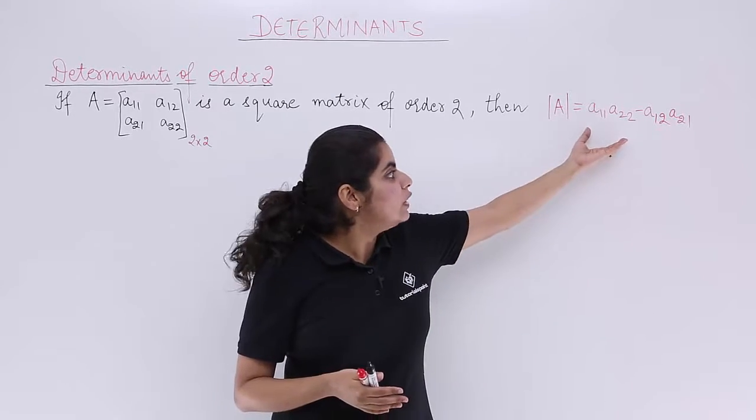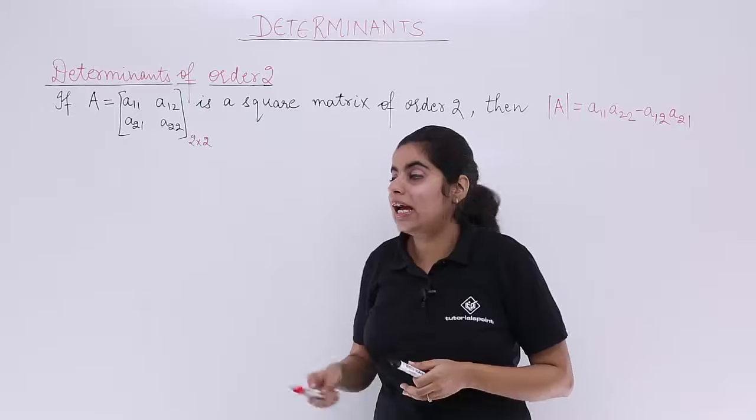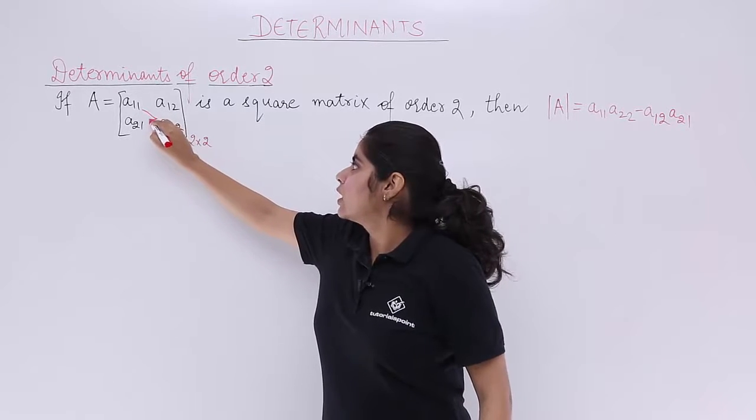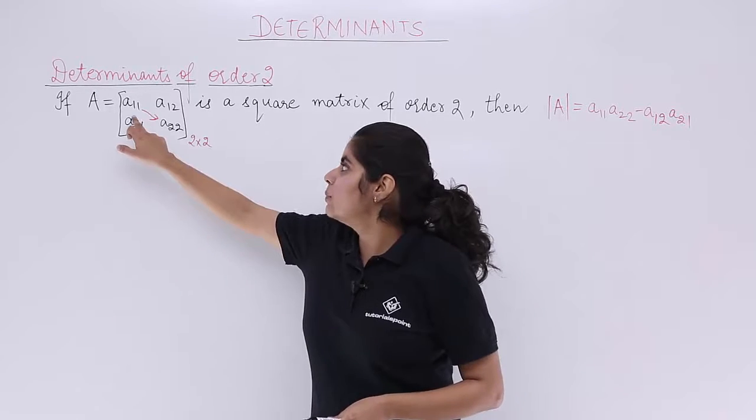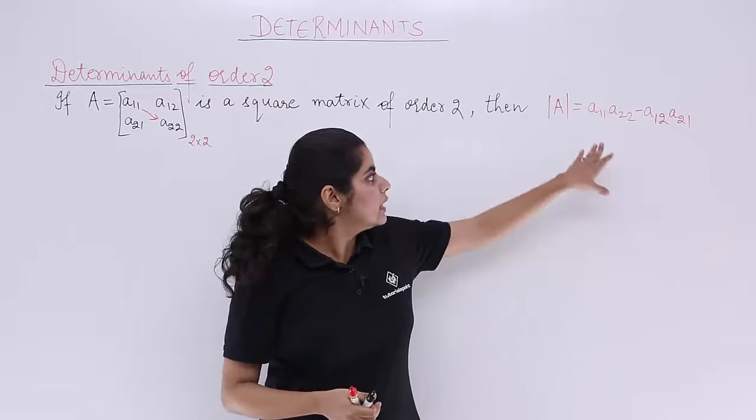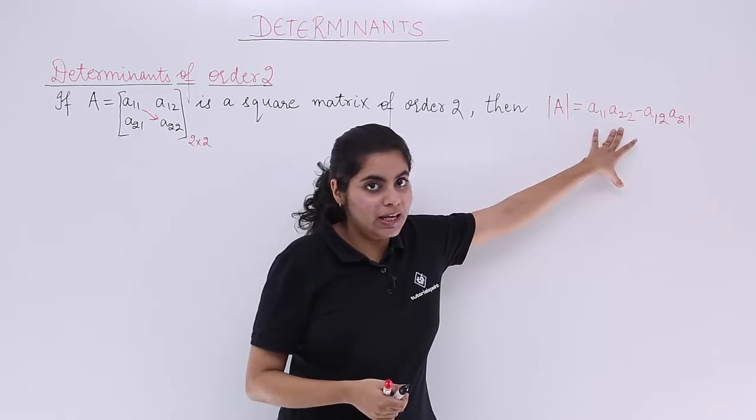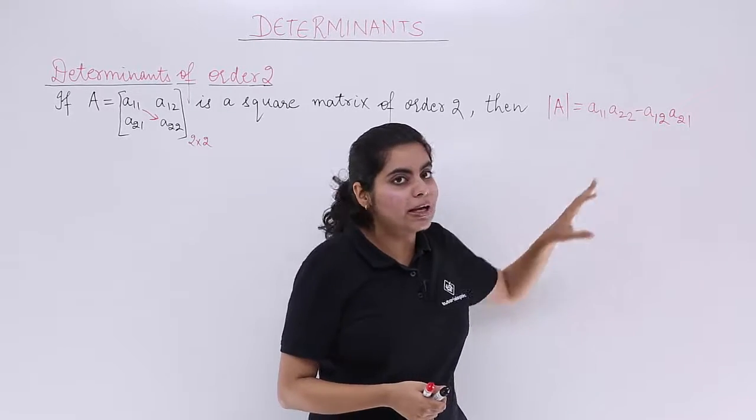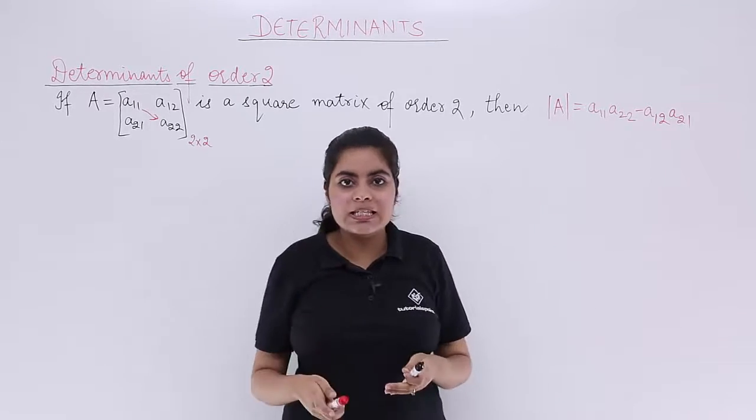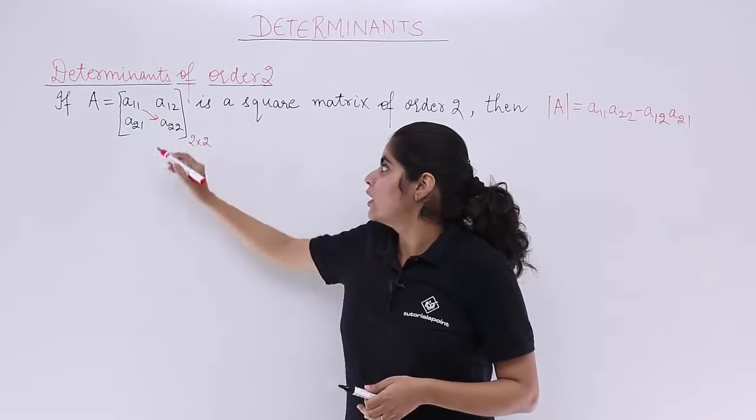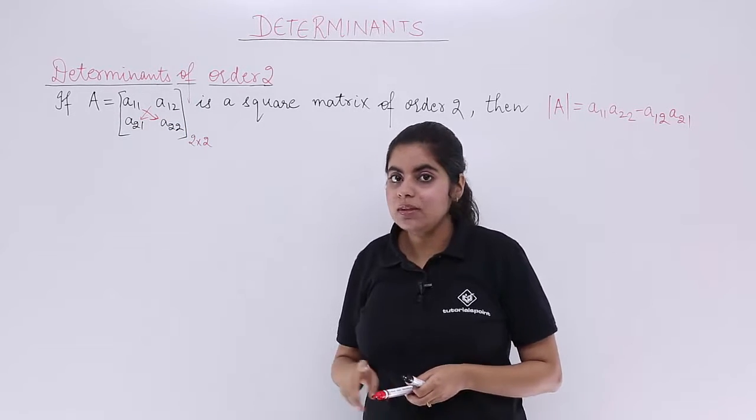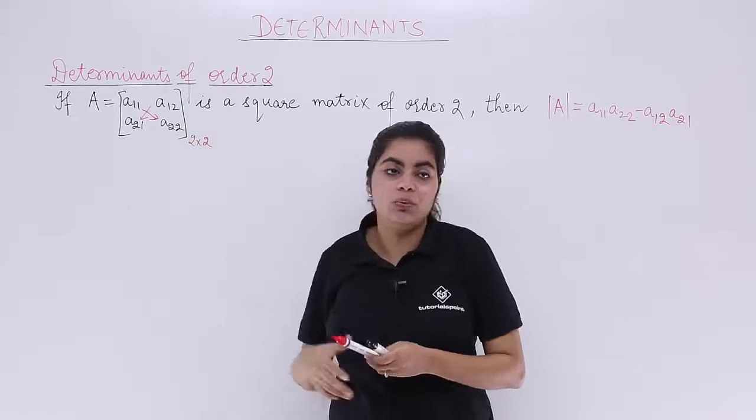So how is this value coming out? The trick is to cross multiply. Cross multiply starting with a11, so it becomes a11 multiply a22, followed by minus sign by your own. You write minus sign by your own. Next what you do is again cross multiply, starting from upwards only.